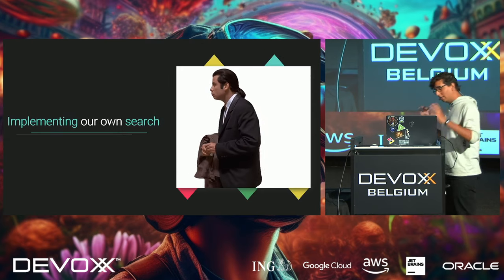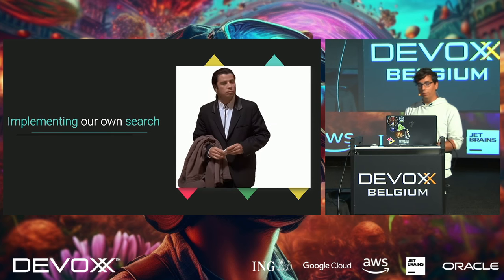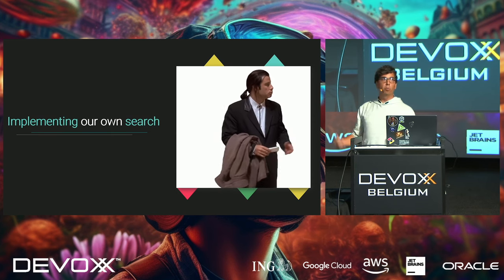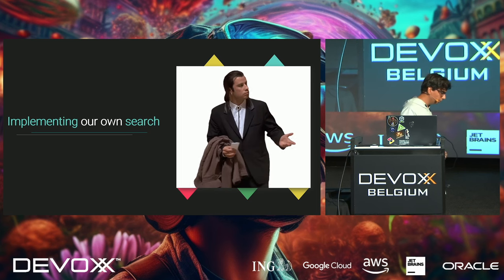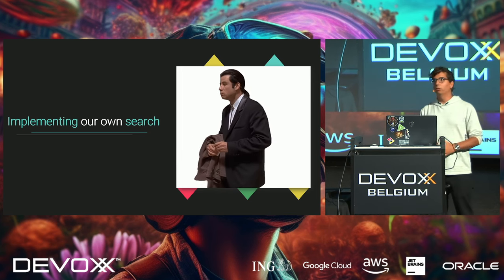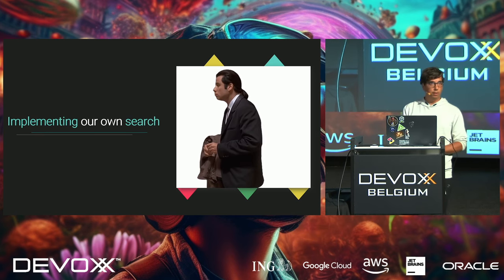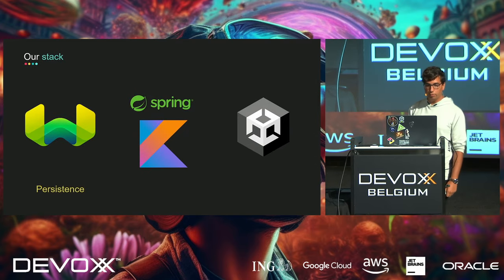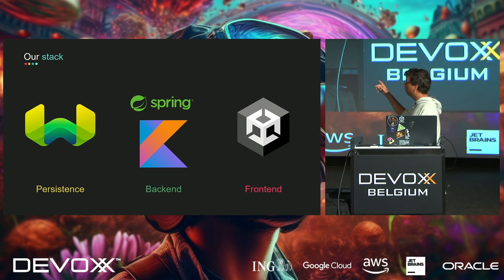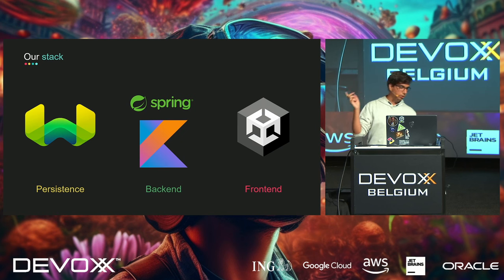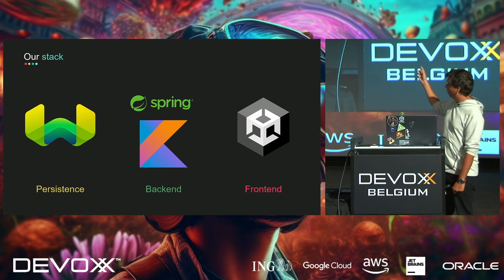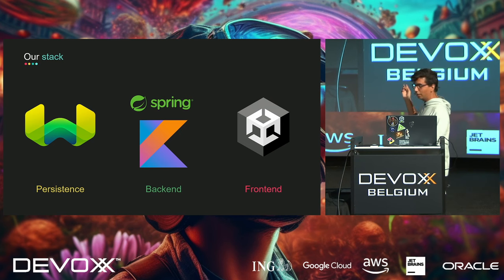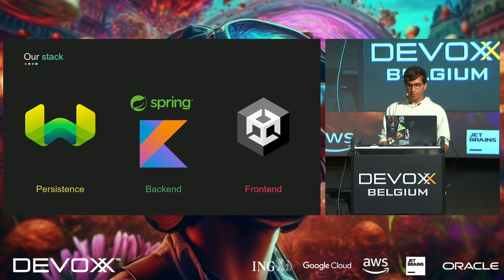For our demo I chose Weaviate for persistence, Spring Boot with a back-end written in Kotlin — because Kotlin is a superior JVM language, change my mind — and Unity for the frontend.